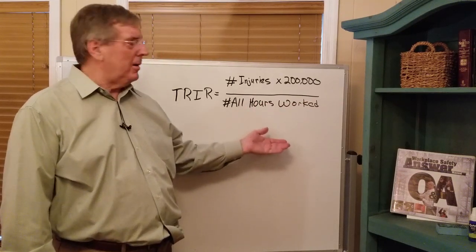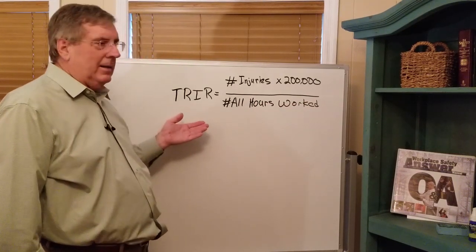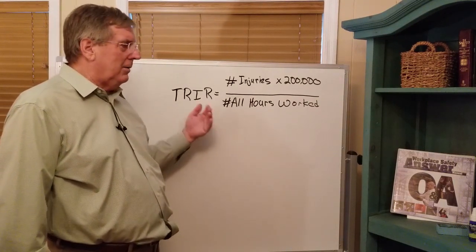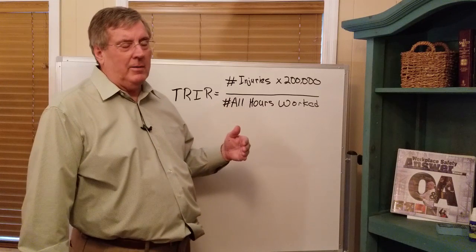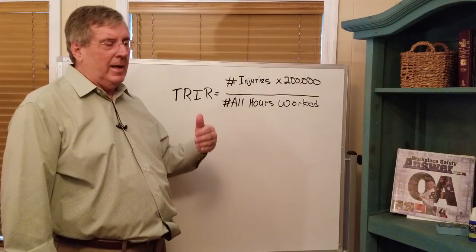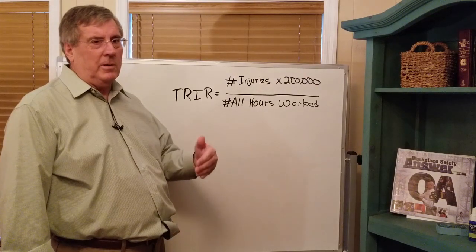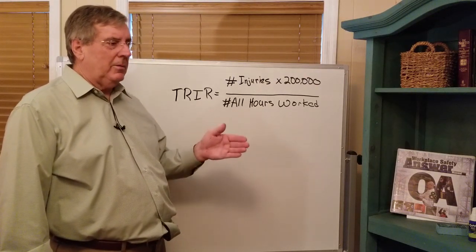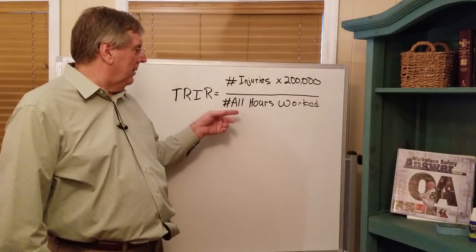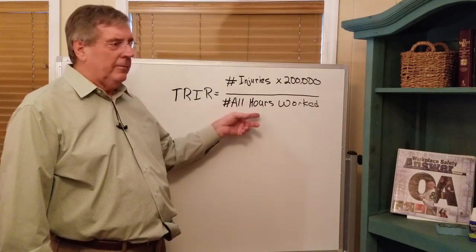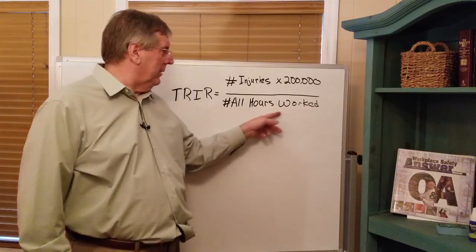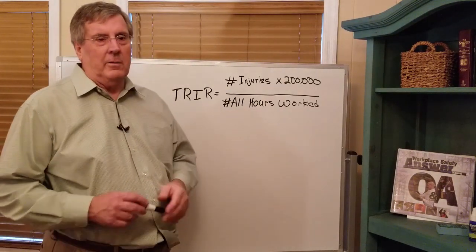Then you take the number of salaried individuals — for example, if there are 10 salaried individuals, you figure each one works an average of 2,000 hours per year, so 10 × 2,000 = 20,000 salaried hours. You add the salaried hours to the hourly hours, and that is the number that goes in the denominator.